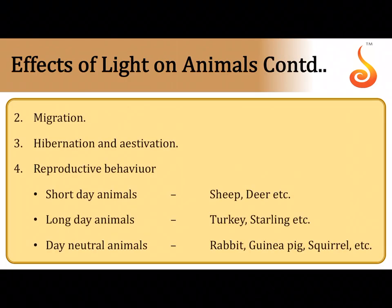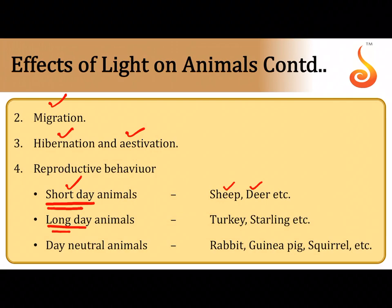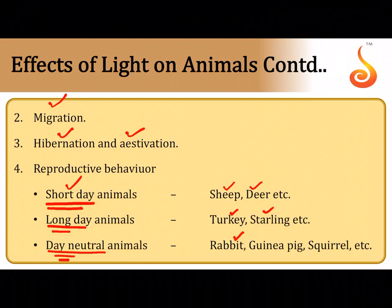In response to light, animals migrate, hibernate, estivate, and show reproductive behavior. Animals that become reproductively mature during winter when days are short are called short-day animals — for example sheep and deer. Animals that become sexually mature during summer when days are longer are long-day animals — for example turkey and starling. Animals that become reproductively mature irrespective of day length are day-neutral animals — for example rodents, rabbits, guinea pigs, and squirrels.